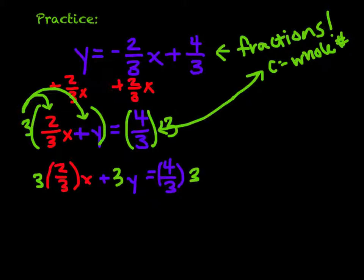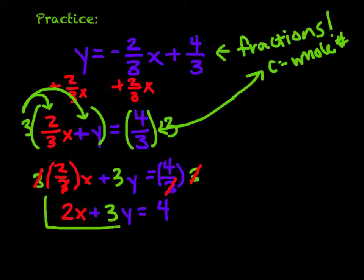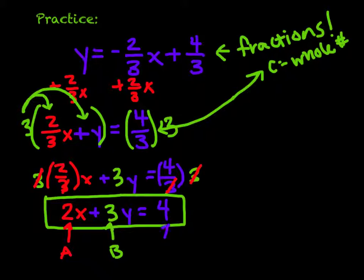So now we need to do a little bit of simplification. We're going to simplify our 3s on this left side with this 2 thirds x. So we just get 2x plus 3y equals one last little bit of simplification. We're going to simplify those 3s, and so we end up with a 4. So here is my final standard form of this equation. We can identify our A, we can identify our B, and we can identify our C in this one. Nice and fun.